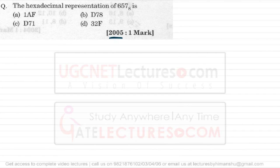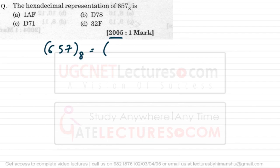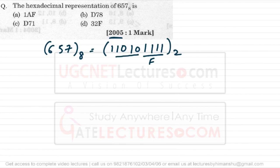Final question (GATE 2005, 1 mark): find the hexadecimal representation of octal 657. First convert to binary — each octal digit as 3 bits: 6→110, 5→101, 7→111, giving binary 110101111. Then group 4 bits from the LSB: 1111=F, 1010=A (10), and with three leading zeros 001=1. The hexadecimal equivalent is 1AF, so option A is correct.